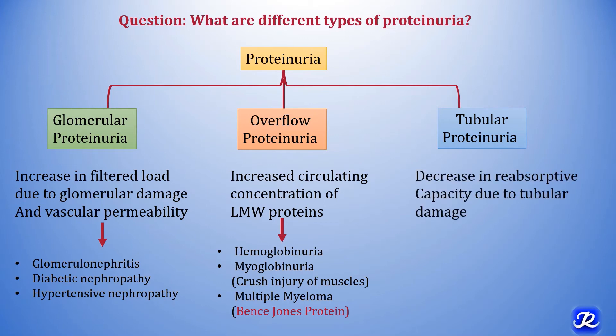The third type, tubular proteinuria, is due to a decrease in reabsorptive capacity caused by tubular damage. Proteins are excreted in the urine because they cannot be reabsorbed, and this is associated with chronic kidney disease.